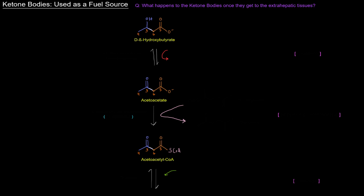Okay, so we've got the D-beta-hydroxybutyrate that we made in the liver mitochondria, and now it's in the extra hepatic tissues, specifically in the mitochondrial matrix of them. We're going to take the D-beta-hydroxybutyrate that we made and turn it back into acetoacetate, which is the other ketone body.